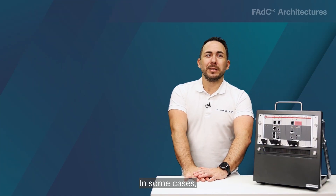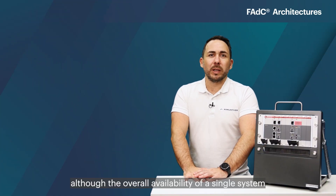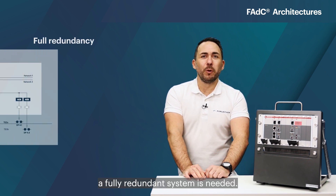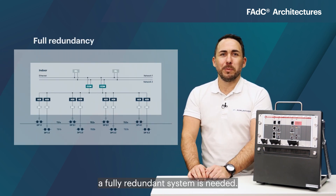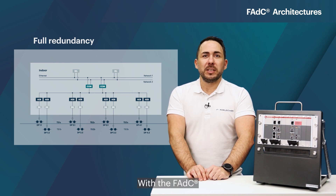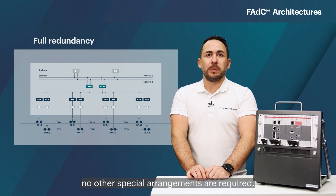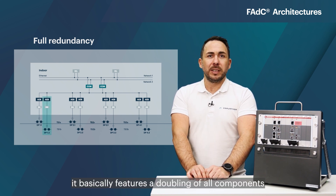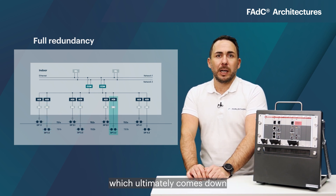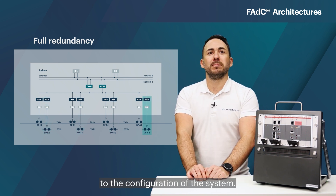In some cases, although the overall availability of a single system is already very high, a fully redundant system is needed. With the FADC no other special arrangements are required. It basically features a doubling of all components, which ultimately comes down to the configuration of the system.